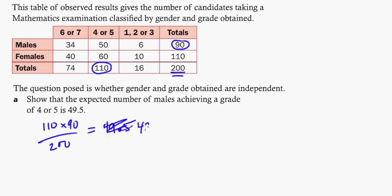So that's pretty simple. If we wanted to find the expected value of each one of these, you would do 74 times 90 divided by 200, 74 times 110 divided by 200. On your project, if you're doing a chi-square test, you would go through each one of these.